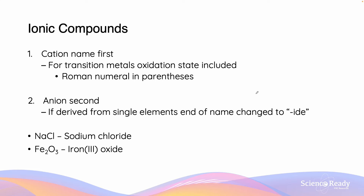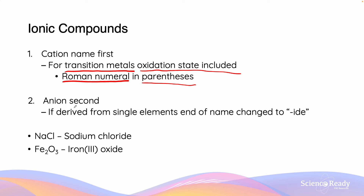For ionic compound nomenclature, the cation name is named first. Usually the cation of the ionic compound is composed of a metal, and if that metal is a transition metal, then the oxidation state has to be included, given as a Roman numeral in parentheses. Note that there should be no space between the transition metal name and the parentheses. The anion name follows, and if it is derived from a single element, then the end of the name is changed to "-ide", just like with covalent compounds.